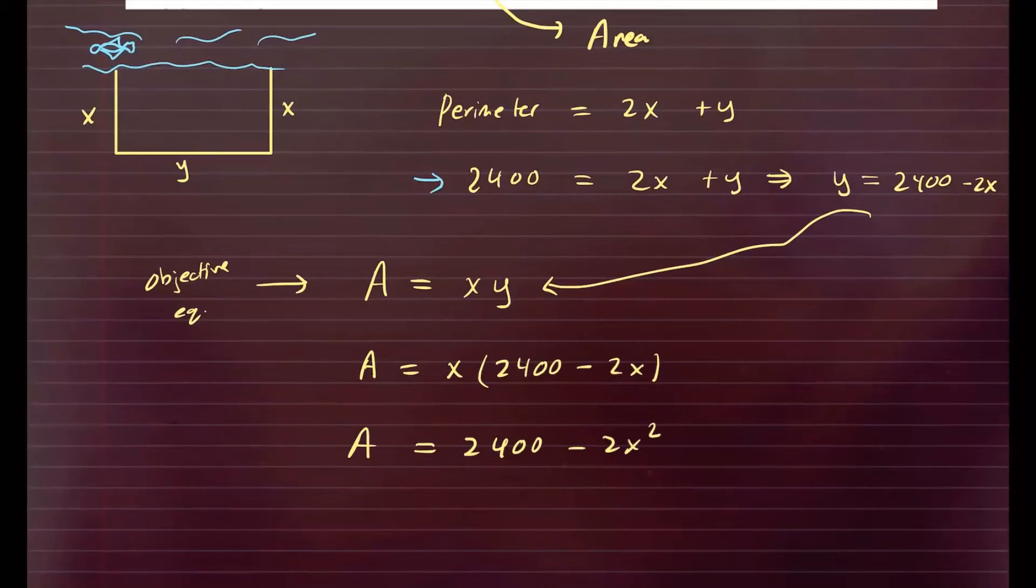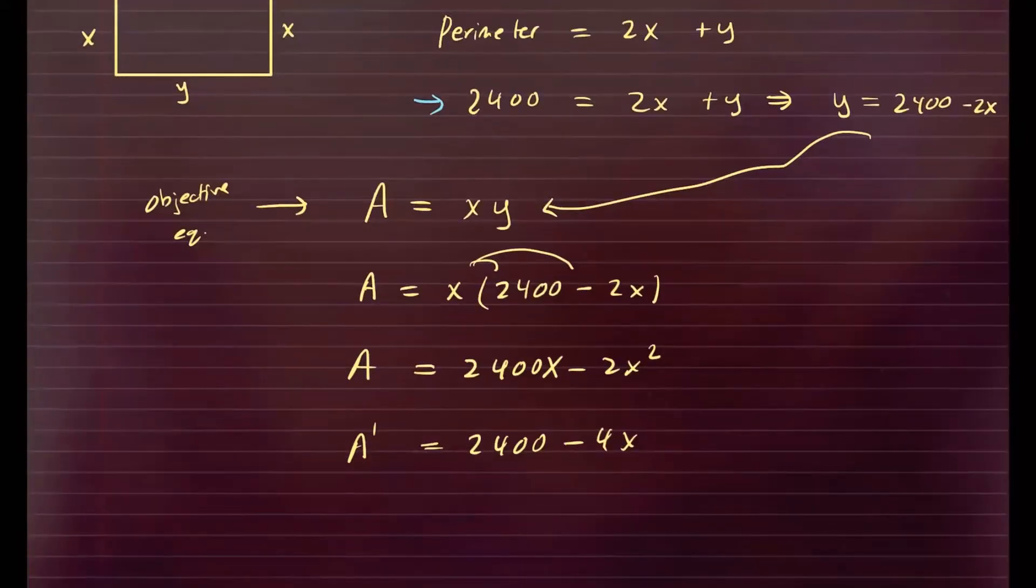So if you take the derivative, you'll have A prime is equal to, I'm missing an x here when I distributed the x, so that will give us 2400 minus 4x. Now we want to find critical numbers, so we're going to set this equal to 0. Once we do that, we have x is equal to 2400 over 4, and that would give you about 600.